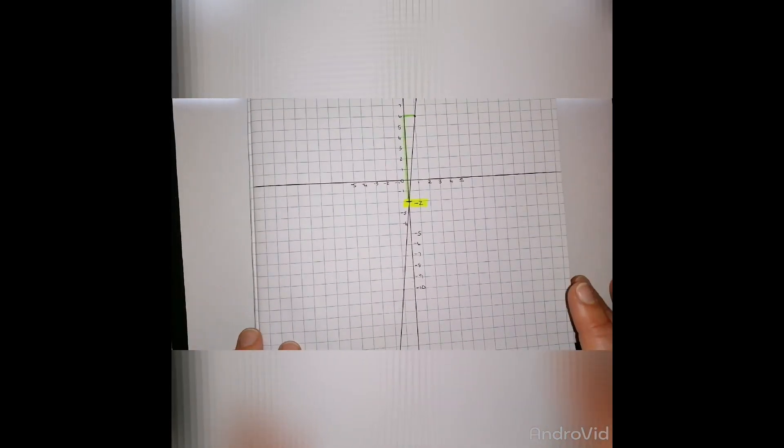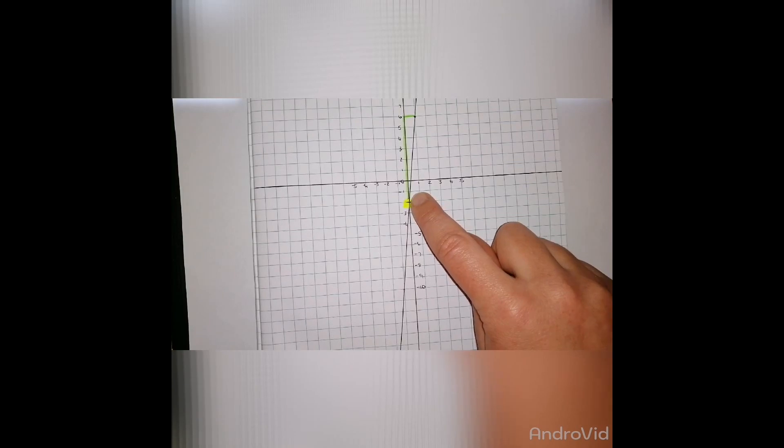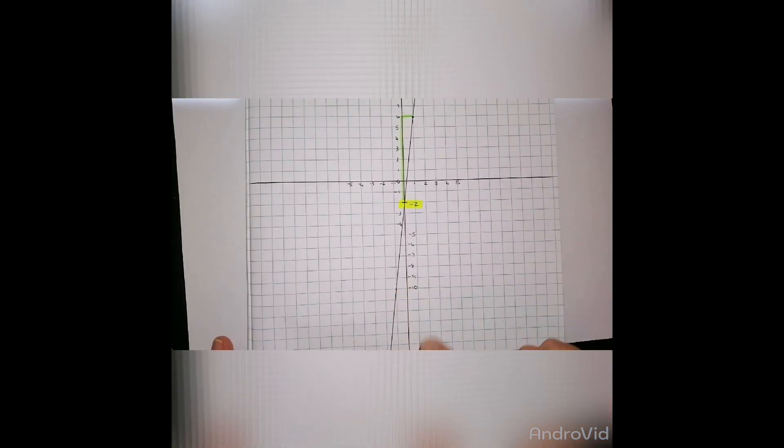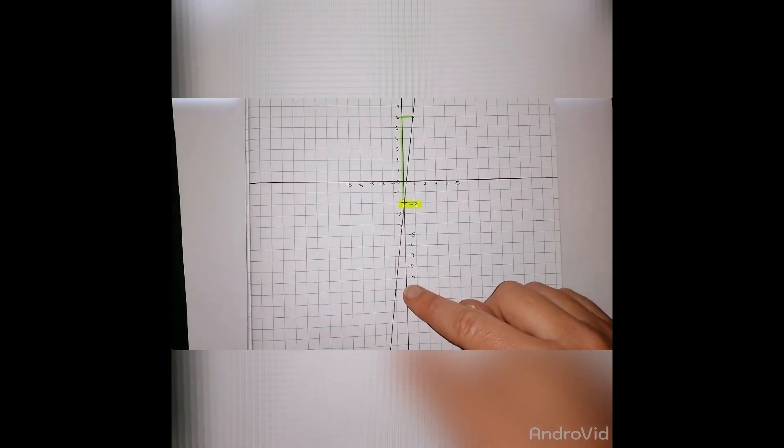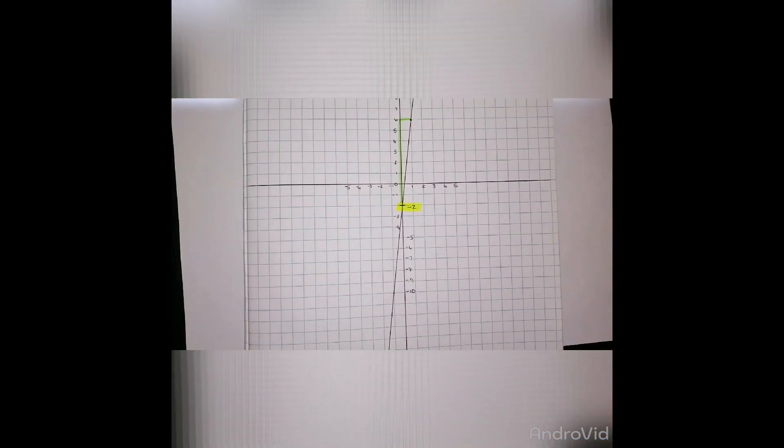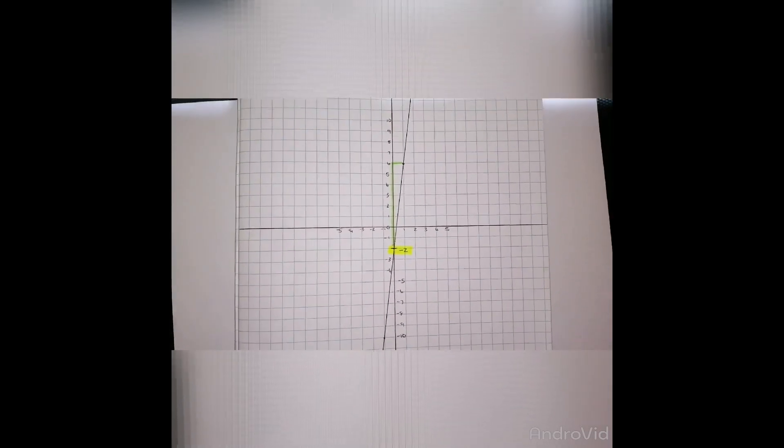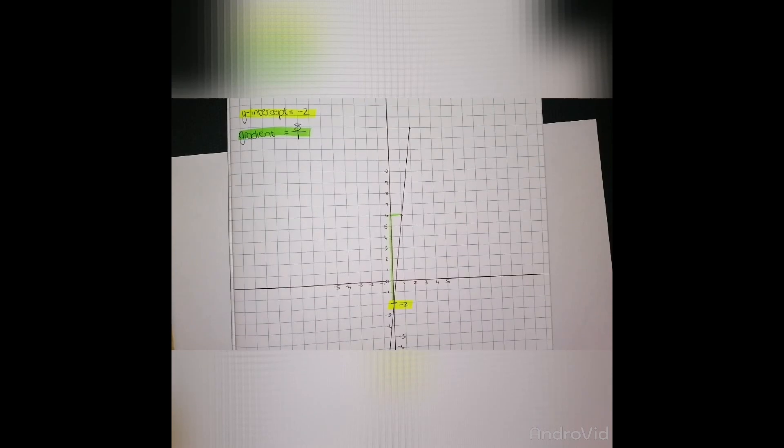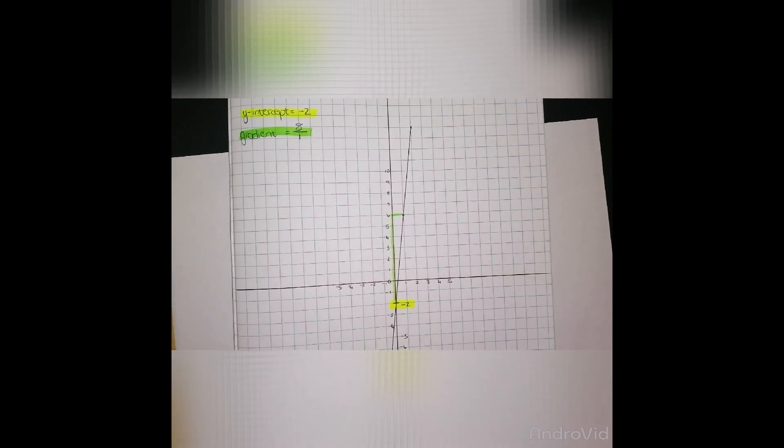So moving downwards, we go 8 down and 1 out, and the same thing carries on: 8 down, 1 out. After I've done that, now I connect all the dots and then I have my straight line drawn for m is equal to 8t minus 2.